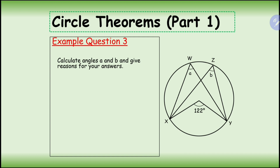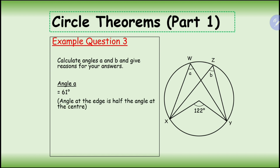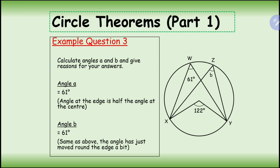Example three: calculate angles a and b and give reasons. The angle at the center is 122 degrees, and the other two are drawn from the same points. The angle at the circumference is half the angle at the center, so angle a should be 61 degrees — half of 122 — and angle b should also be 61 degrees, because it's also half of 122.